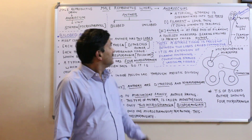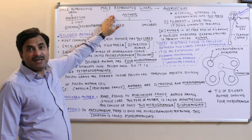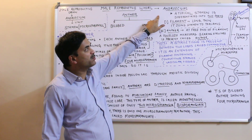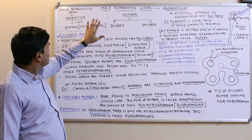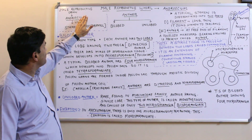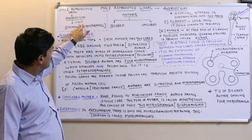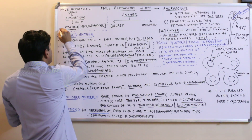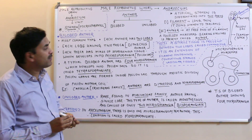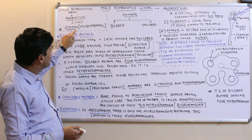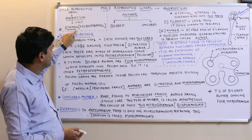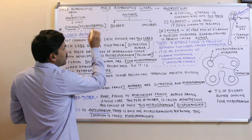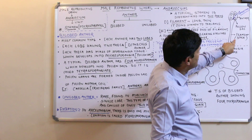Welcome. Today we are going to study the male reproductive world of a flower. The male reproductive organ in a flower is called the androecium, and its unit is the stamen. Biologically and technically, the stamen is also called a microsporophyll.